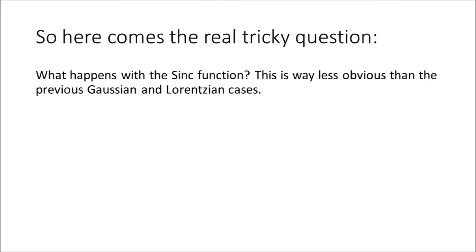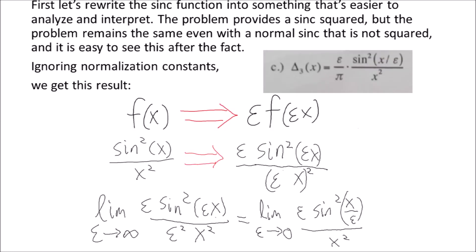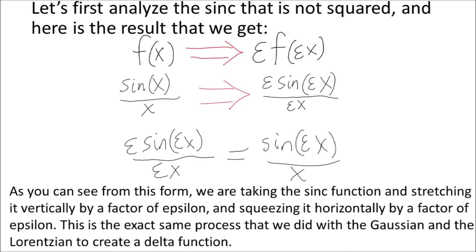Here comes the real tricky question: what happens with the sinc function? This is way less obvious than the previous Gaussian and Lorentzian cases. First, let's rewrite the sinc function into something easier to analyze. The problem provides a sinc squared, but the problem remains the same even with a normal sinc. Ignoring normalization constants, we get this result. We are taking the sinc function and stretching it vertically by a factor of epsilon and squeezing it horizontally by a factor of epsilon — the exact same process we did with the Gaussian and Lorentzian.